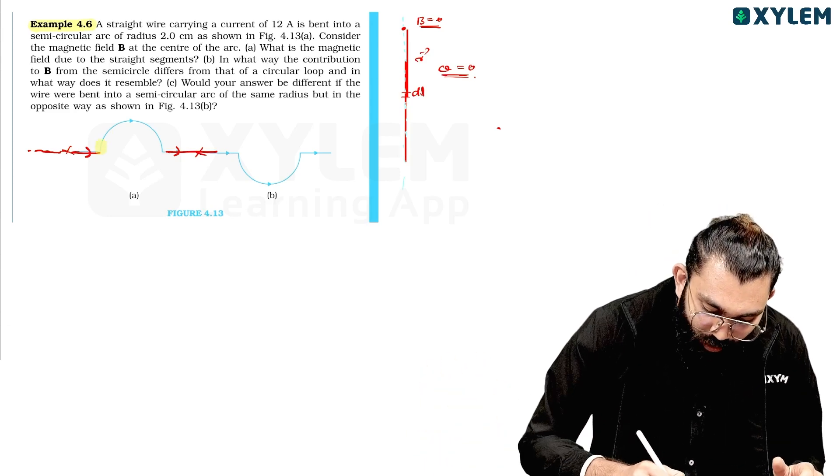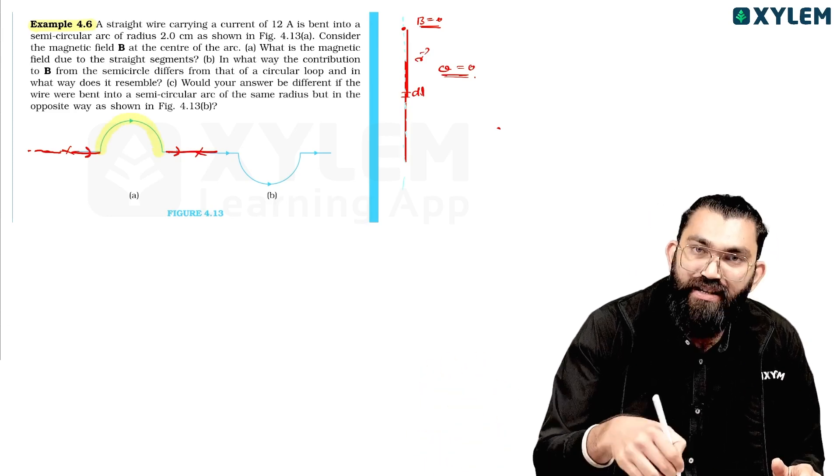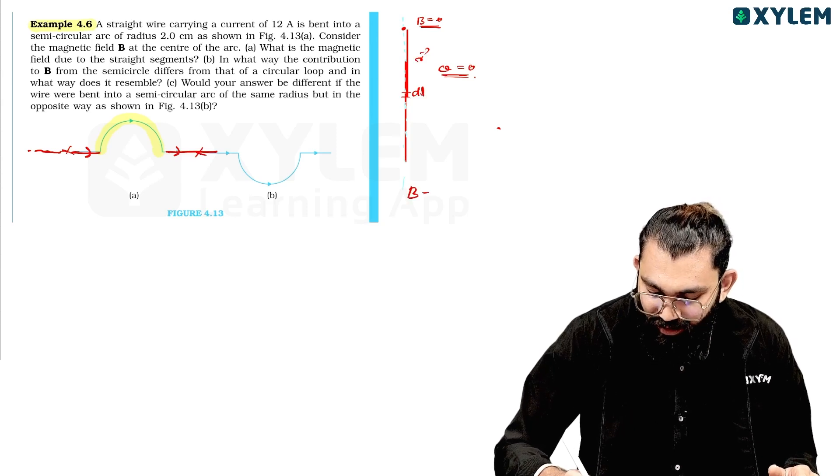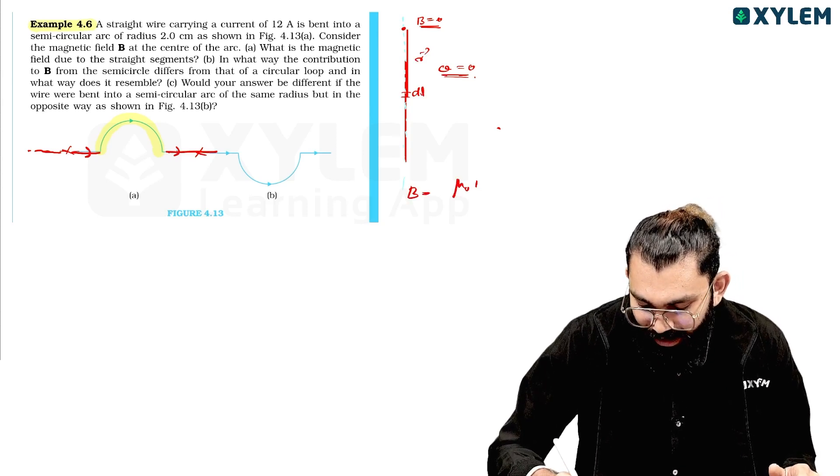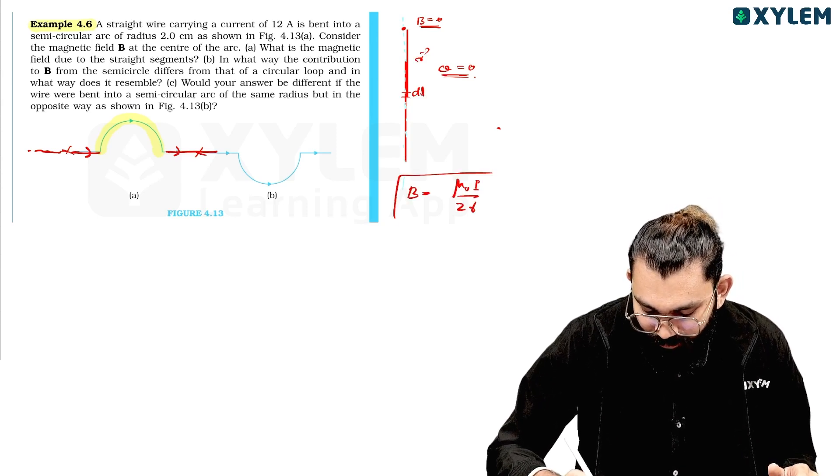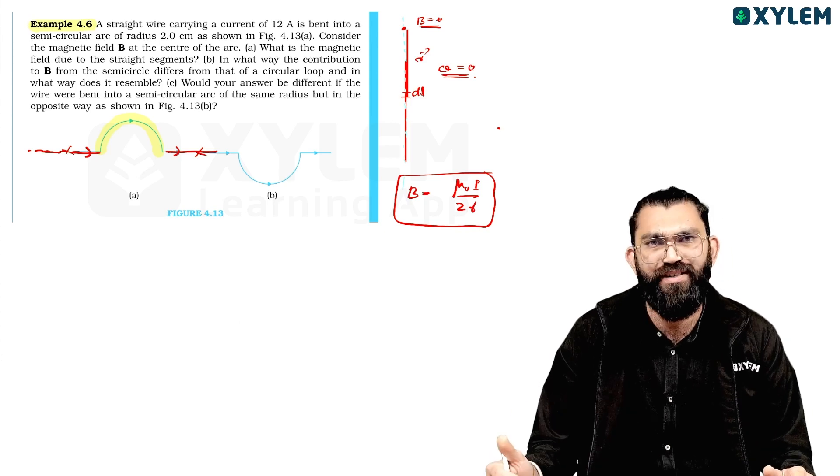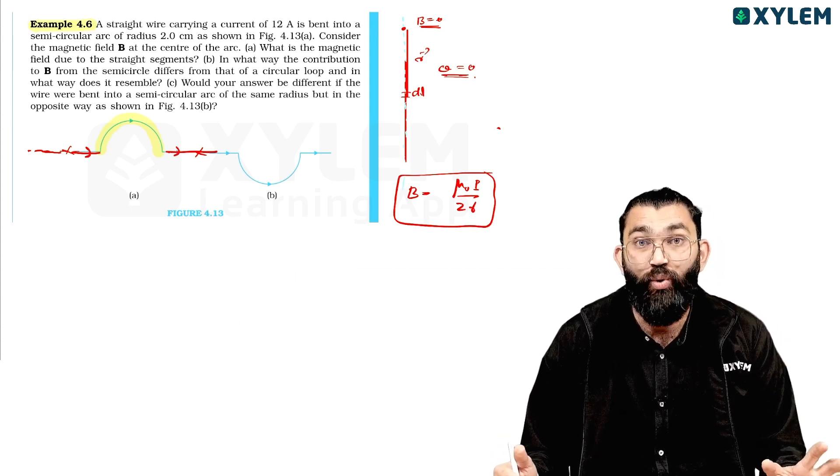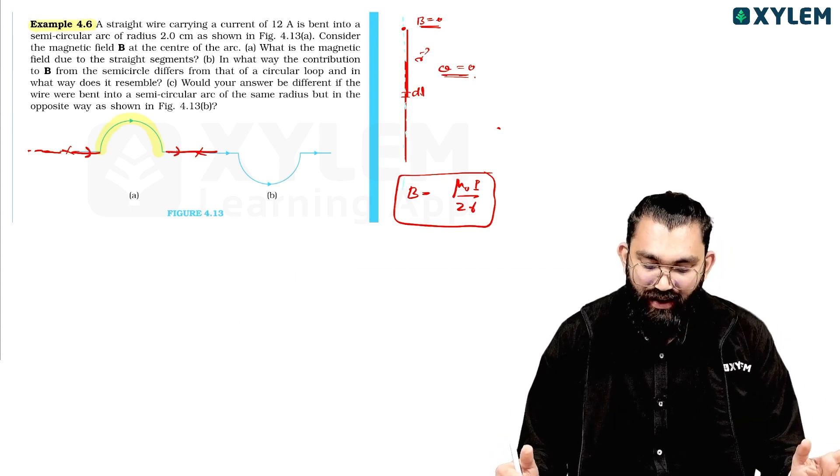This semi-circular loop contributes to the magnetic field. If it is a complete loop, then the magnetic field at the center of a circular loop is mu_0 i divided by 2r. That we have already learned. Mu_0 i by 2r.